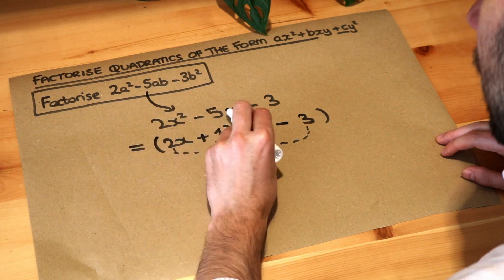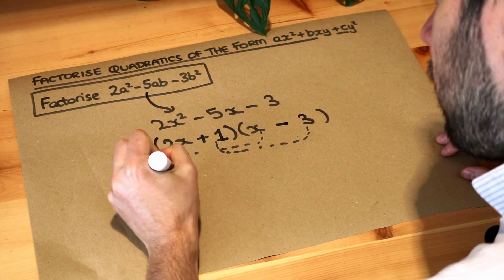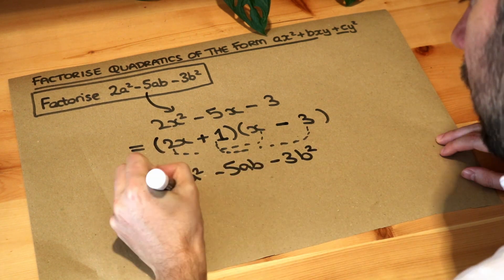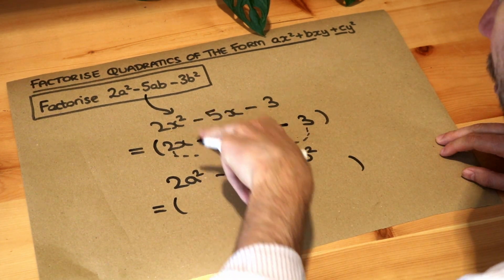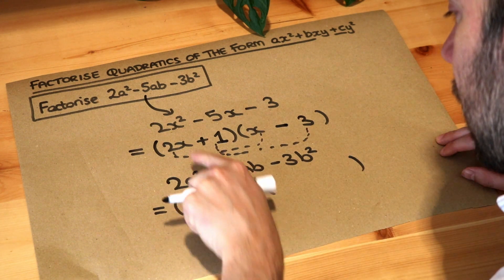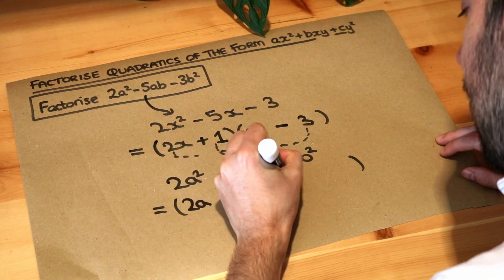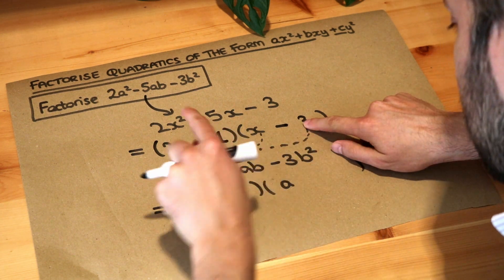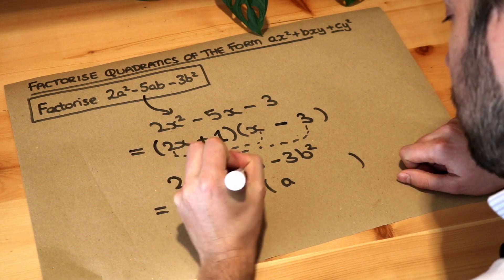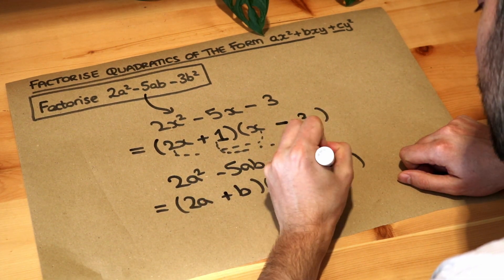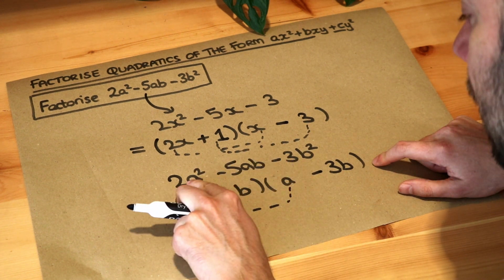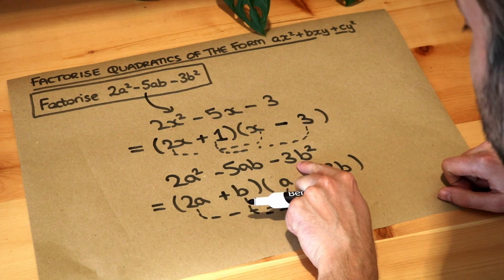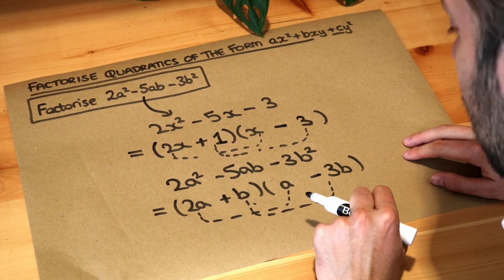So 2x squared minus 5x minus 3 factorises to this, but we've got 2a squared minus 5ab minus 3b squared. So let's think how we factorise this in a way that's going to be very similar to this factorisation here. Now we want to get 2a squared, so it's going to be like 2a and a in a similar way, and also want to get minus 3b squared. So using these numbers here of 1 and minus 3, it could be plus 1b and minus 3b, because you can see now the 2a times the a, that's going to give you the a squared in the expansion. The b times the minus 3b will give you the minus 3b squared in the expansion, and actually if you look at the other terms in the expansion, you will actually get the minus 5ab.